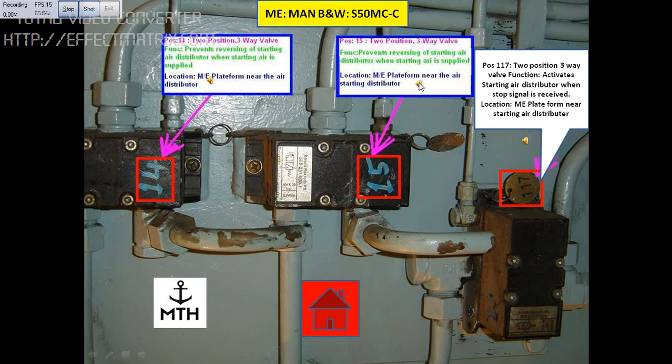This block is position number 15, which is a 2-position 3-way valve. The function of this valve is to prevent reversing of the starting air distributor when starting air is supplied. Location: main engine platform, near the air distributor.